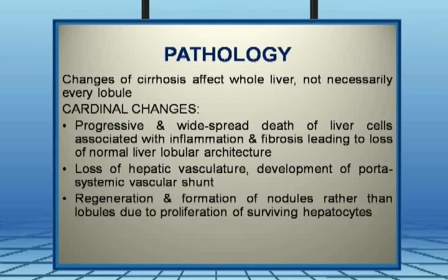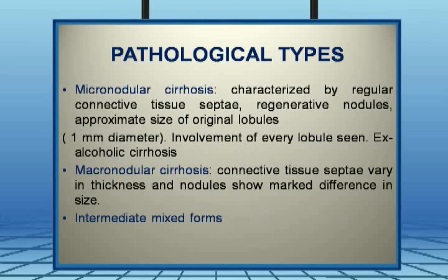The key word pathologists always use is loss of normal architecture of the liver. Loss of hepatic vasculature also happens, and this leads to portosystemic vascular shuntings. Regeneration and formation of nodules rather than lobules, due to proliferation of surviving hepatocytes, also occurs. Pathological types include micronodular cirrhosis, where connective tissue septa are regular and regenerative nodules approximate the size of the original lobules — around one millimeter — with involvement of every lobule, as seen in alcoholic cirrhosis. This explains why alcoholic liver disease is a more serious condition.